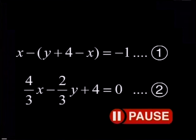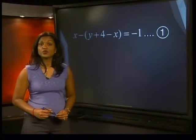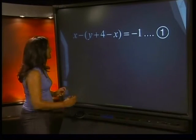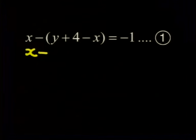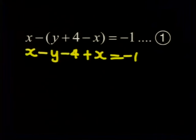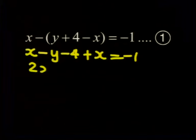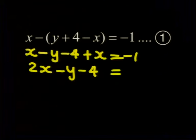Here are the equations. Can we simplify these equations? In equation 1, we can multiply out the bracket to get x minus y minus 4 plus x equals minus 1. Now if we add and subtract like terms, we get 2x minus y minus 4 equals minus 1.